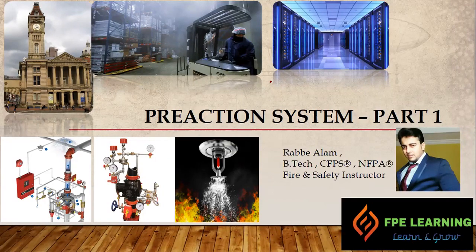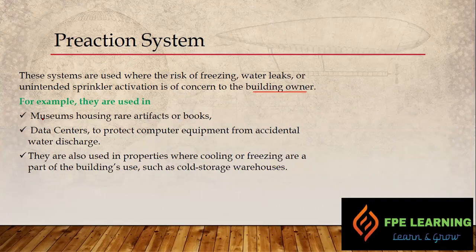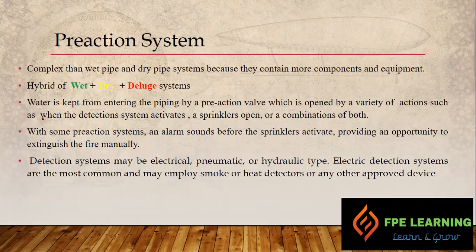Pre-action systems are used where the risk of freezing, water leaks, or unintended sprinkler activation is a concern to the building owner — for example, museums housing real artifacts or books where we don't want false activation, data centers to protect computer equipment, and properties where cooling or freezing is part of the building's use, such as cold storage warehouses. This is a complex system compared to wet and dry systems because it has more components. We can say a pre-action system is a combination of wet, dry, and deluge systems.